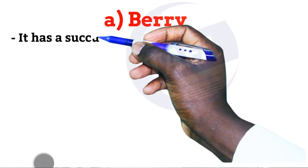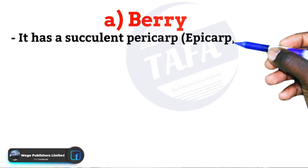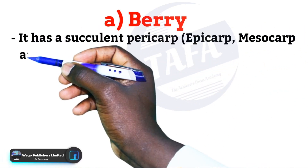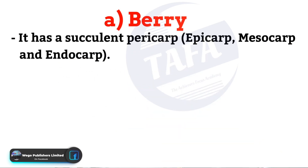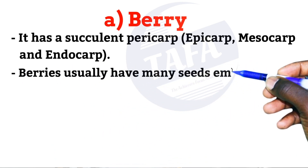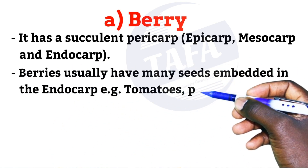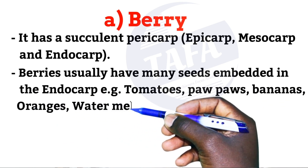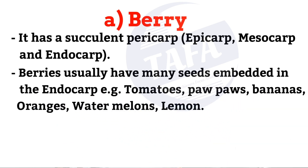The first category of succulent fruits is the berry. A berry has a succulent pericarp, meaning the epicarp, mesocarp, and endocarp are all juicy. Berries usually have many seeds that are embedded in the endocarp. Examples include tomato, pawpaw, bananas, oranges, watermelons, and lemon.